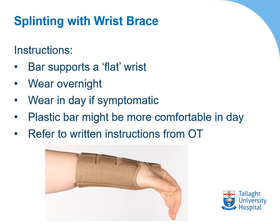One of the first things we will do is provide you with a wrist brace for your carpal tunnel syndrome. The wrist brace has a metal bar on the palm side and is adapted so that it supports your wrist in a flat position, leaving as much space in the carpal tunnel as possible so that the median nerve is not getting squashed or stretched. We'll ask you to wear it overnight for six weeks. Depending on your symptoms, we may get you to wear it during the day, and in some cases we may replace the metal bar with a plastic bar. We'll provide you with written instructions, and if you have any difficulties, contact your occupational therapist.